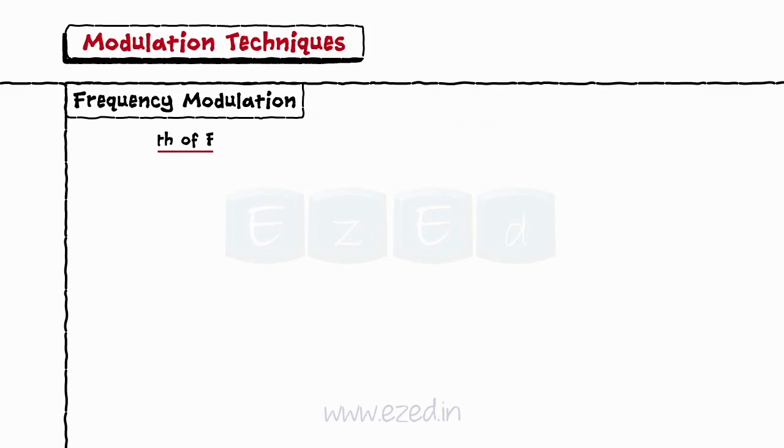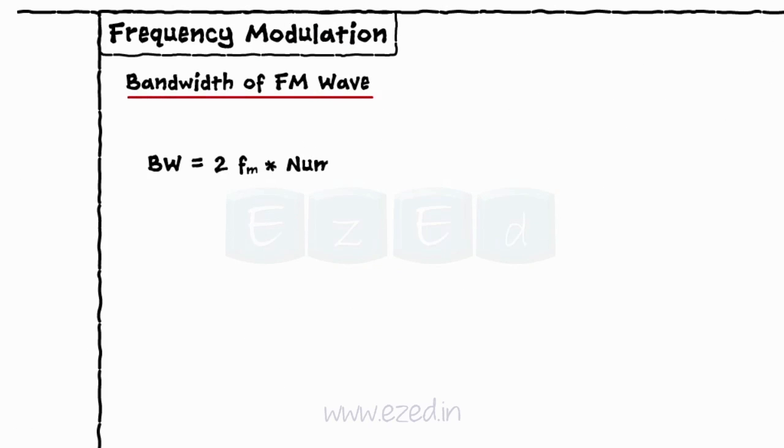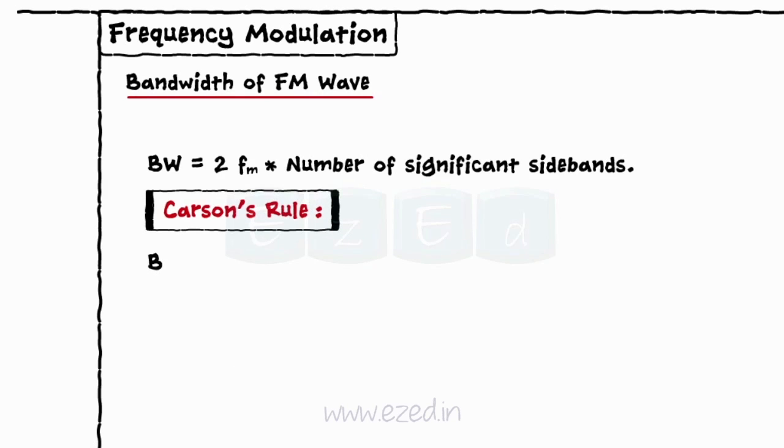The bandwidth of FM wave is calculated as Bw equals 2 into number of sidebands. It can also be obtained using Carson's rules as Bw equals 2 into maximum deviation plus maximum frequency.